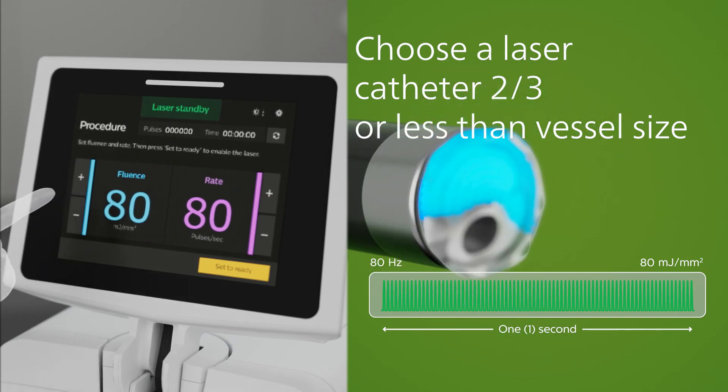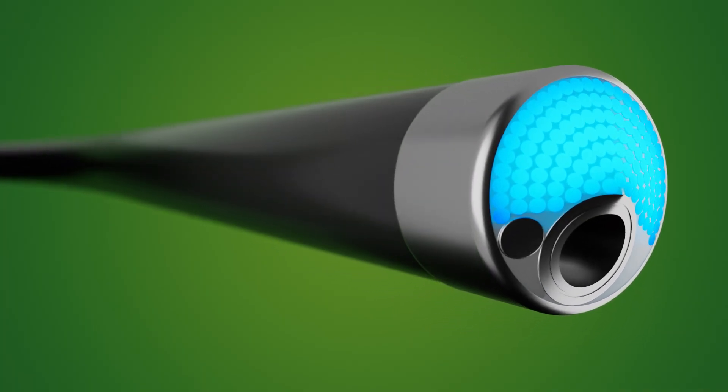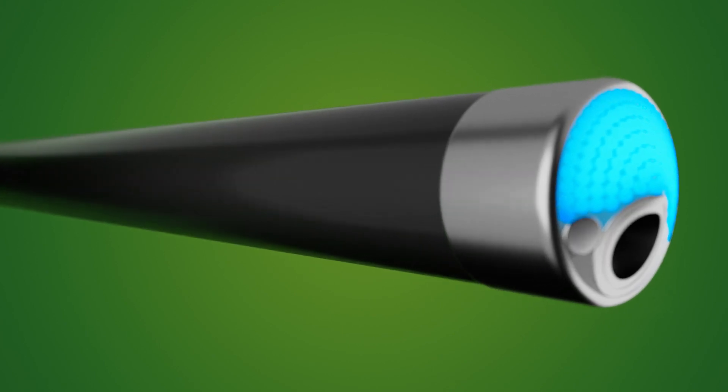At max fluence settings, the cavitation bubble will be approximately 50% larger than the tip of the catheter, maximizing debulking.